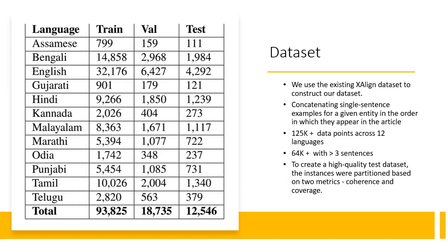Next, we describe the dataset used. We use the existing X-Line dataset to construct our paragraph-level dataset. We concatenate single-sentence examples for every entity in the order in which they appear in the article to construct a paragraph-level dataset. The dataset contains over 100,000 data points across 12 different languages, with several examples with more than three sentences. To create a high-quality test dataset, the instances were partitioned based on two metrics — coherence and coverage — which will be described in the further slides.